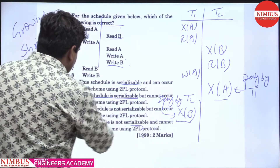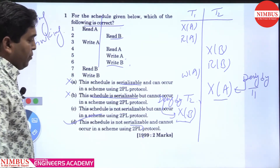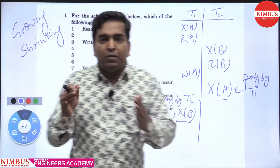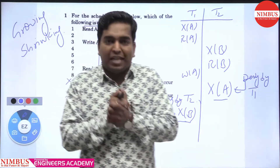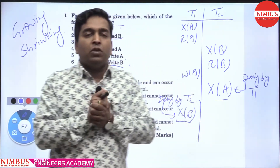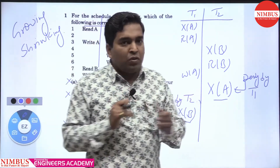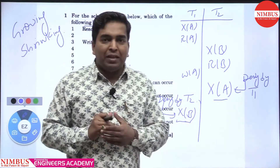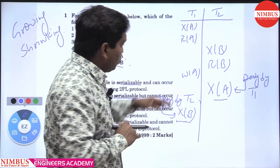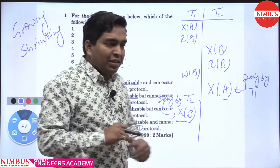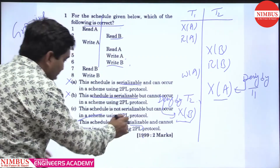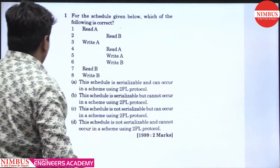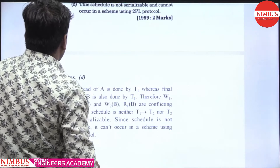So this schedule is not serializable and cannot occur under the 2PL protocol. When we checked conflict serializability, a cycle was formed. And when we checked view serializability, all three conditions were not satisfied. When we tried to apply 2PL, both transactions could not complete their growing phase. So the answer is: this schedule is not serializable and cannot occur under the 2PL protocol.